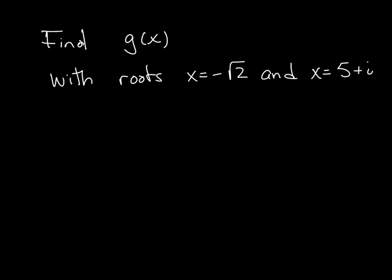So we want to find g(x) with roots of x is equal to negative square root of 2, and x is equal to 5 plus i. We want to make sure this is the lowest degree for f(x), and the leading coefficient is 1. So, again, we're going to start off in making sure we write its conjugate pair.